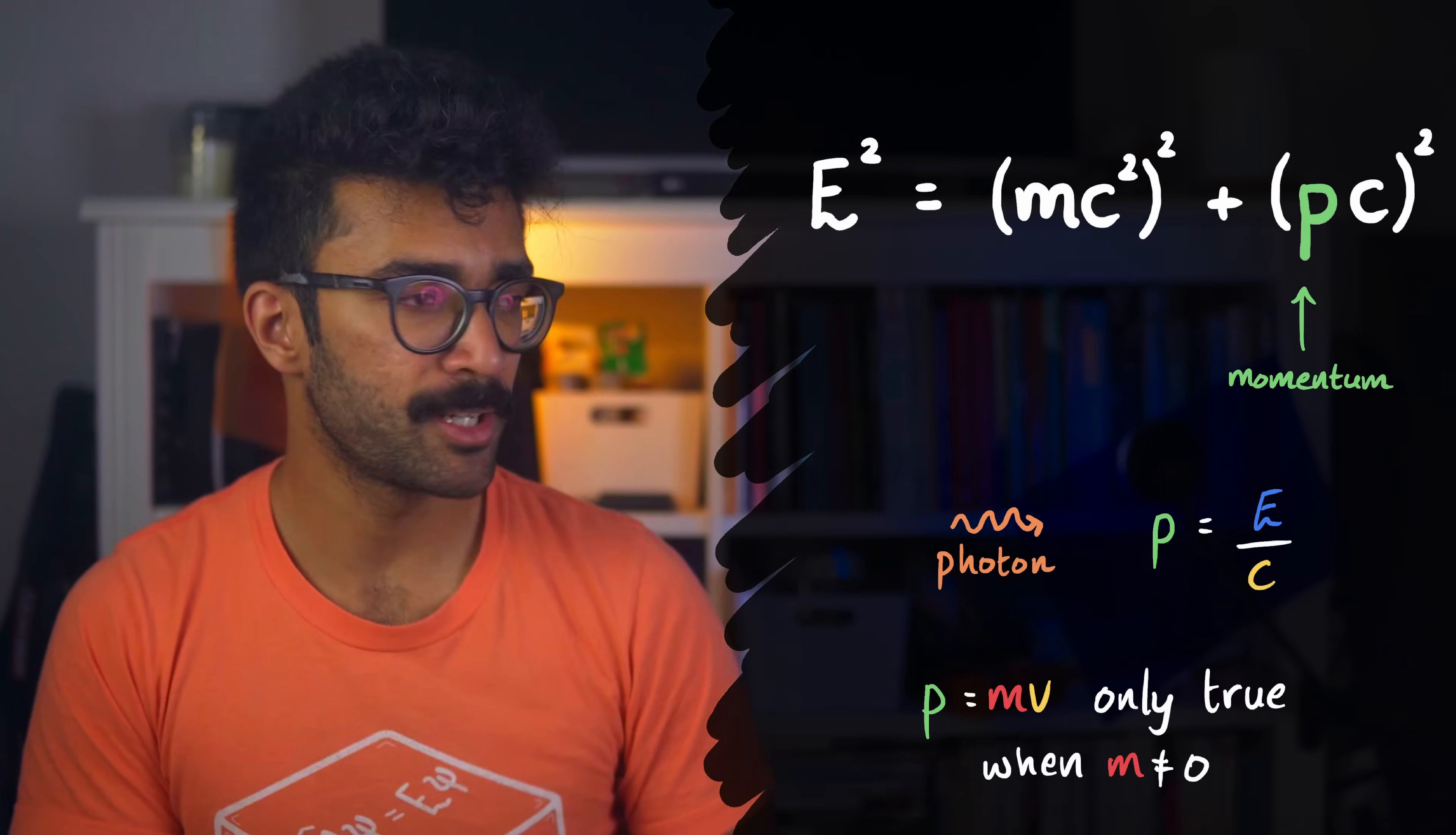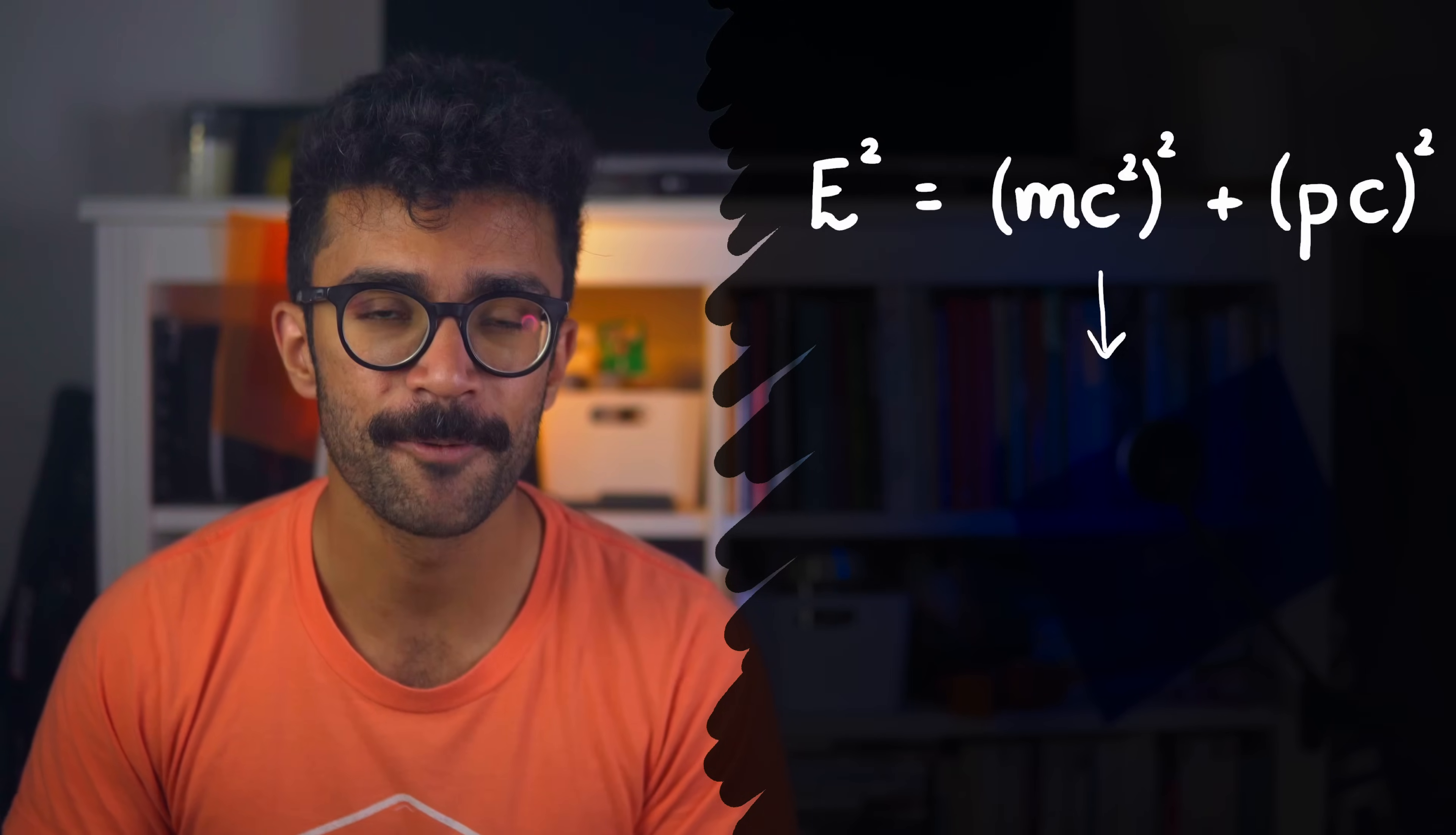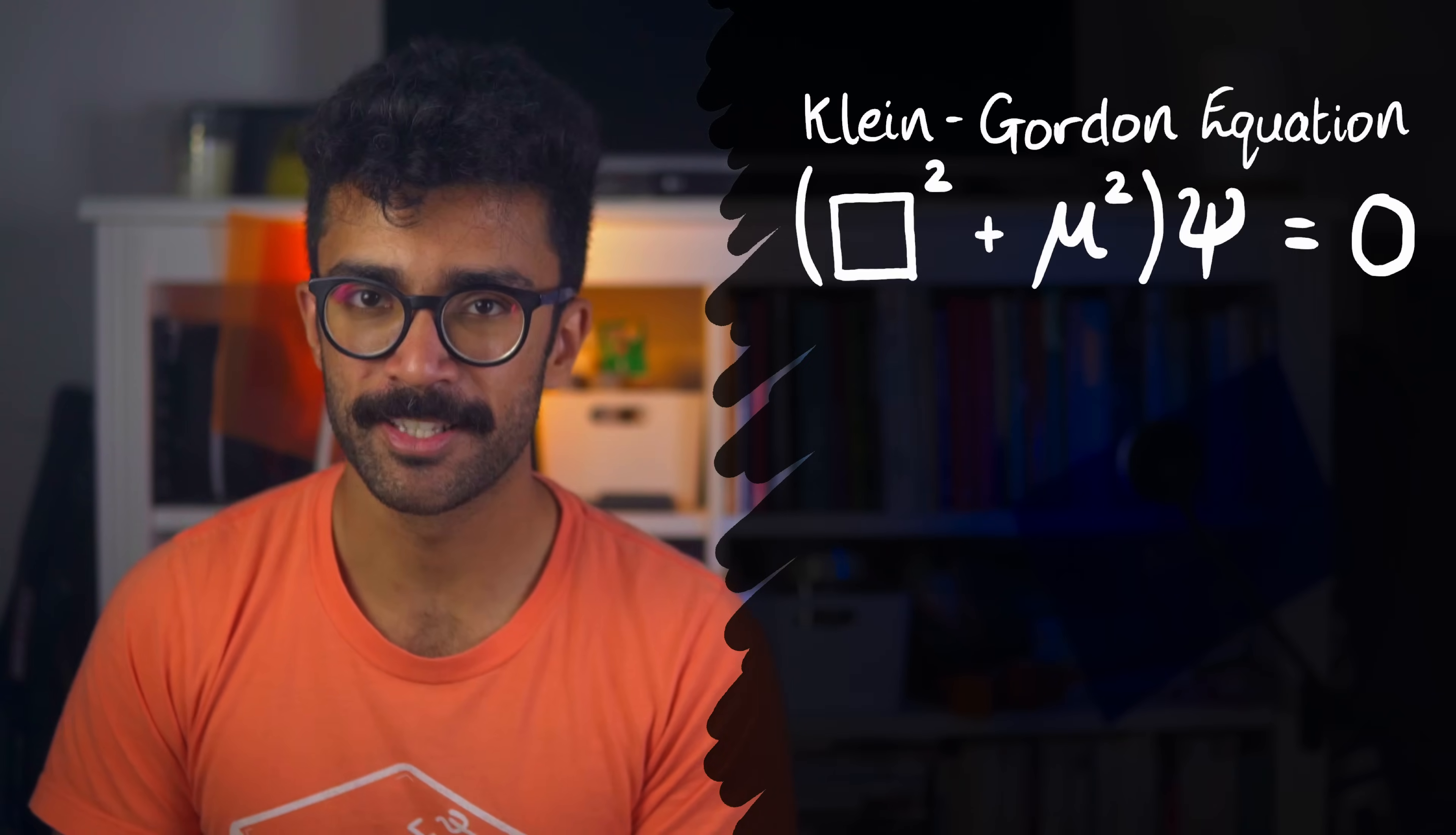Anyway, coming back to our general equation, which describes all objects, we then do some mathematical manipulation, which we won't go into in this video, but I'll definitely cover in a future video. And what we get to is an equation that looks a bit like this. This is known as the Klein-Gordon equation.